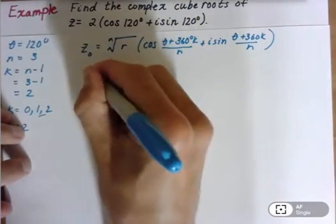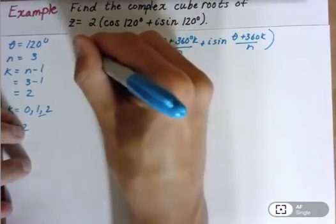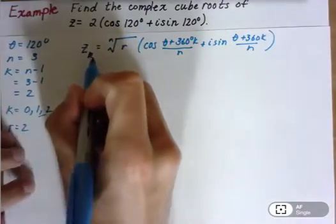So let's just clean this up a little bit because I should say, I'm sorry, z sub k, not 0 here. That should be z sub k.